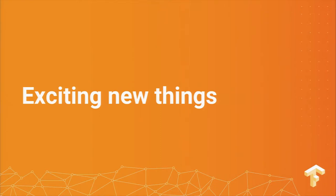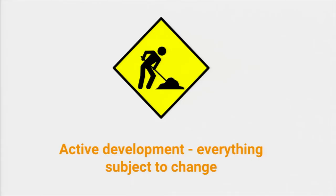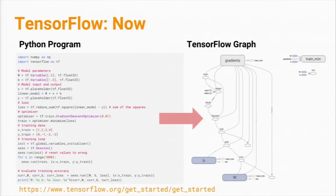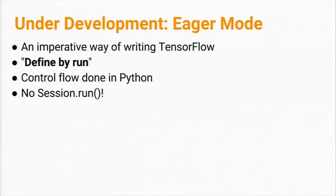I'd like to give you a whirlwind tour of some exciting new things. One thing I mentioned is that people sometimes find it confusing to first build a graph before running it. So we have something under development called eager mode, which is an imperative way of writing TensorFlow. It's defined by run-with-control-flow in Python, takes away a lot of boilerplate like session.run calls, and gives you a lot more flexibility while maintaining the path to get a graph, compile it, and scale out on all these different platforms.